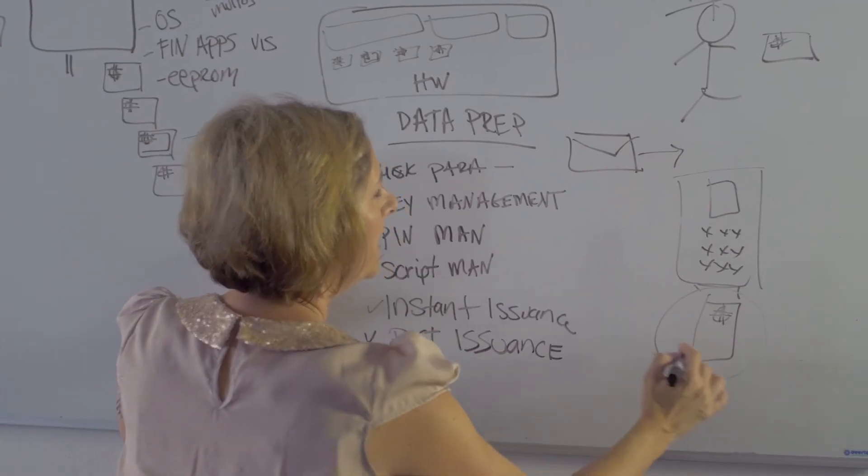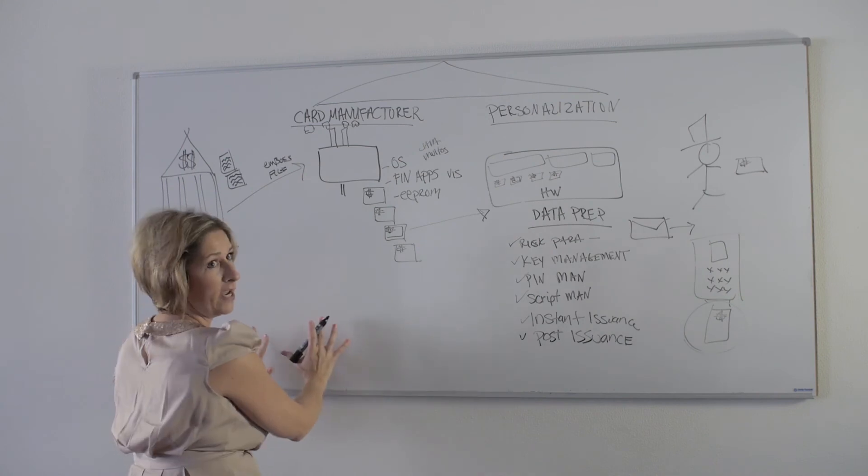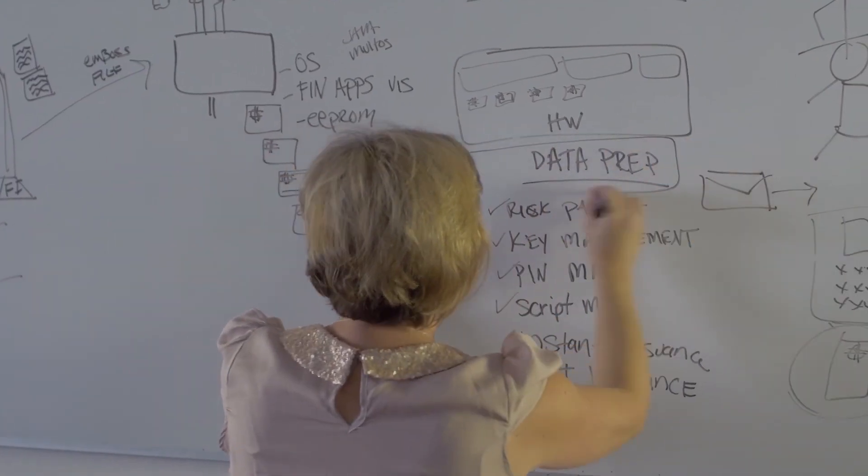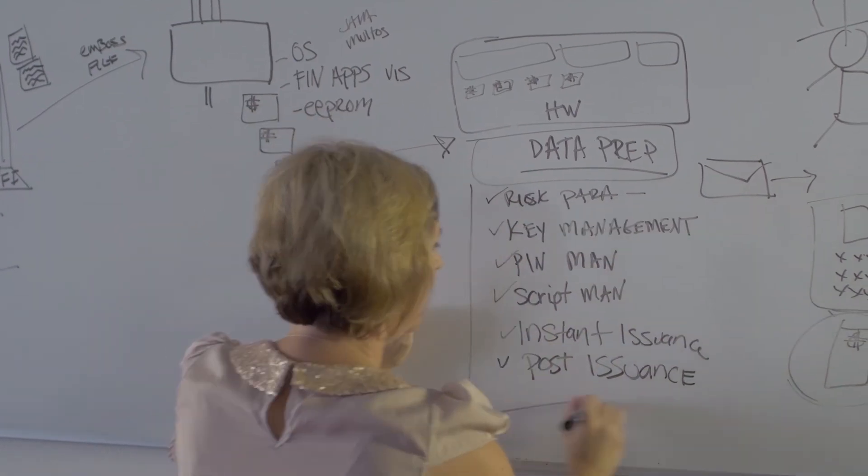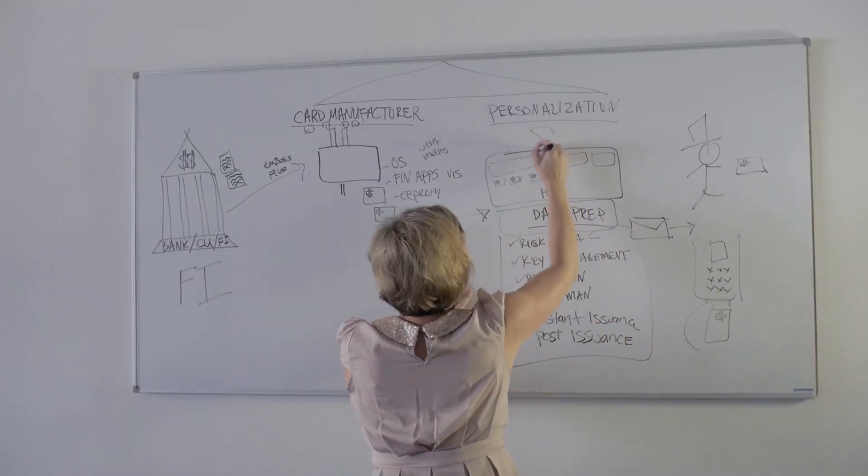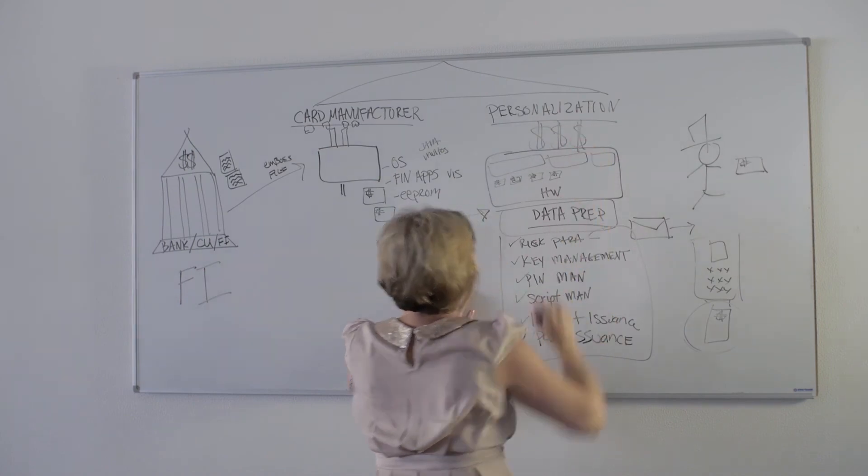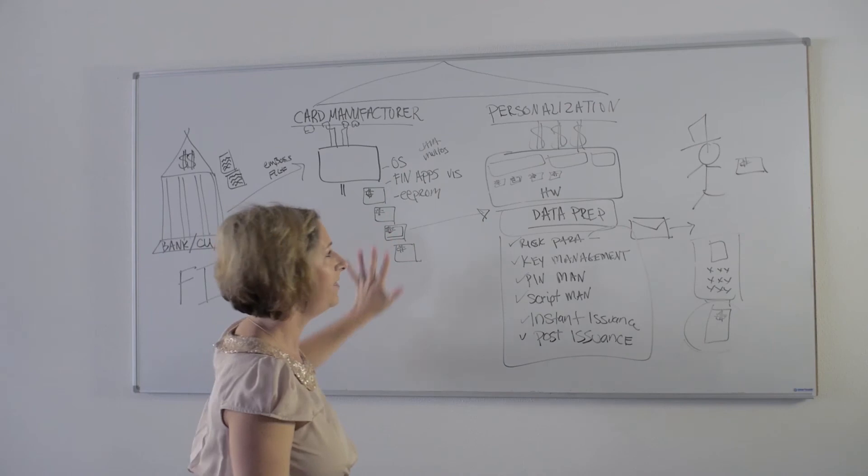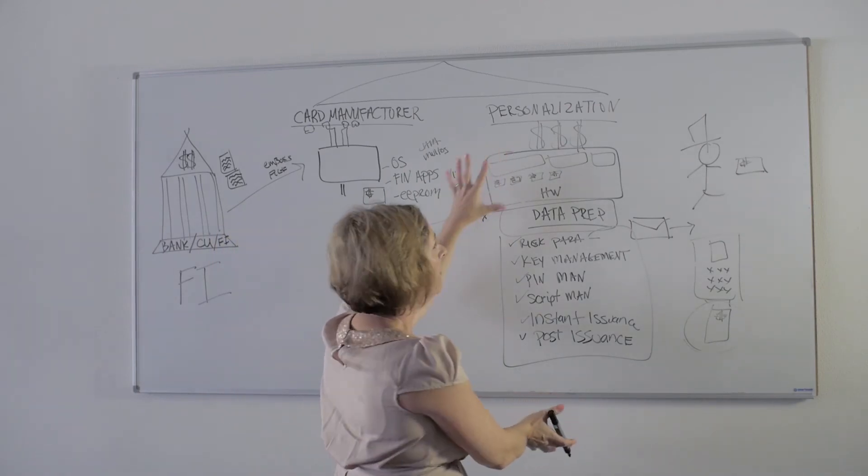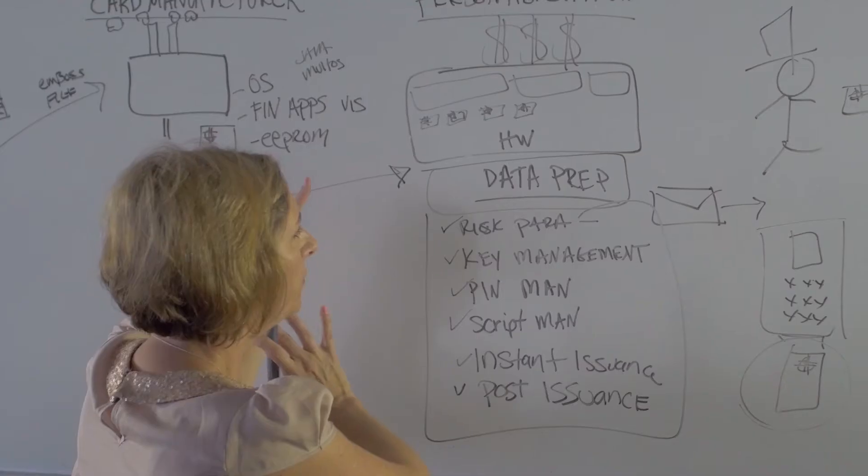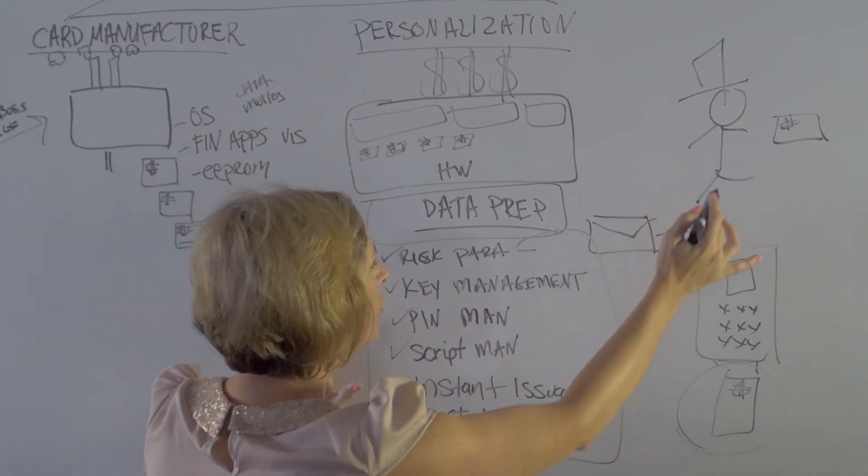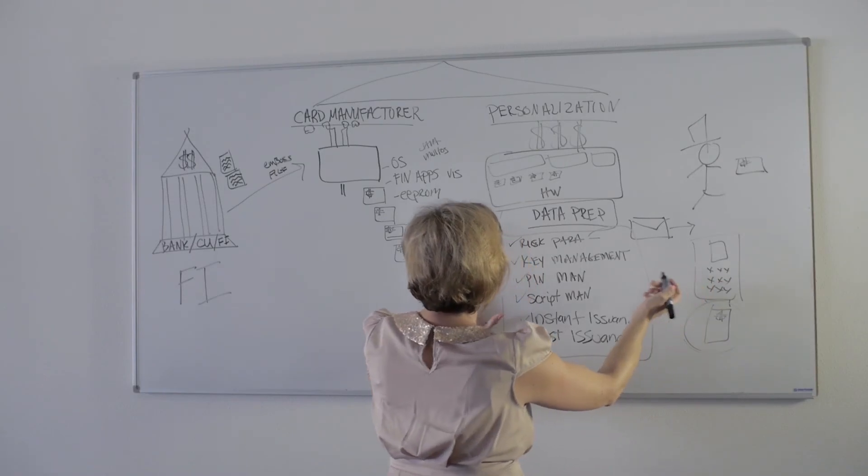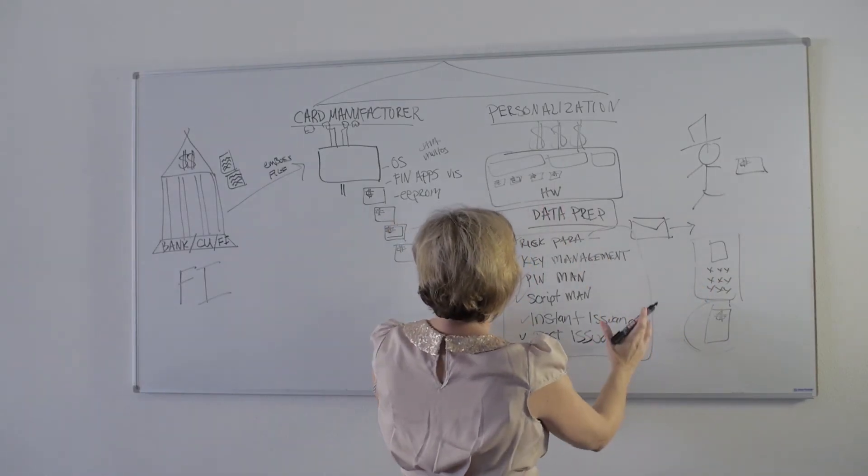So you can imagine the whole lifecycle of this actual EMV card, it goes far beyond when the card is created. Once it hits the field, this whole deliverable right here - data prep as well as the lifecycle - is the most expensive part of EMV. Not the card plastic, not the chip, not the operating system, not the antenna. It's this piece, mainly because once that chip card has been manufactured and it's in the hands of the cardholder, it takes on different profiles. This piece of the deliverable being the data prep...